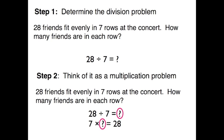Once you've established your division problem, you can move on to step 2 and think of the missing quotient in your division equation as the missing factor in a multiplication equation. So, 28 divided by 7 equals what? Can also be looked at as 7 times what equals 28.